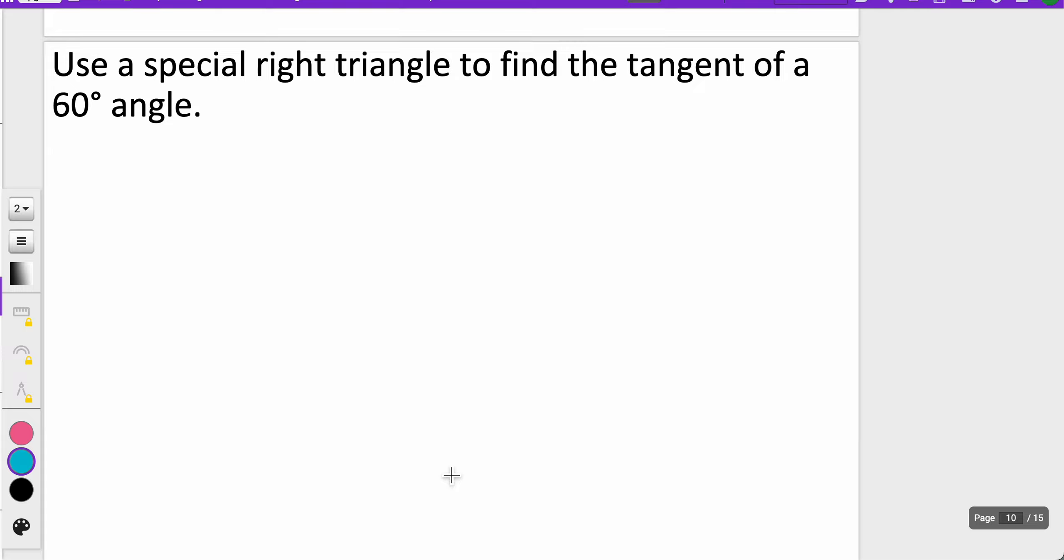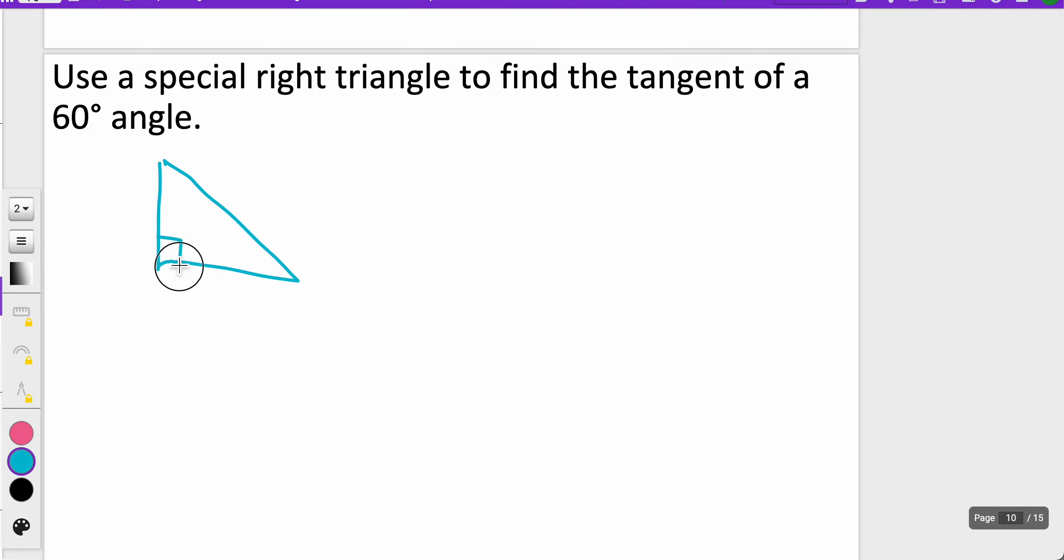Next up, we're going to use a special right triangle to find the tangent of a 60-degree angle. If it's a right triangle, then that means 60 degrees would be one, 30 degrees would be the other. If I want to know the tangent of a 60-degree angle, I also need to remember what is my rule for 30-60-90. For the 30-60-90 theorem, I have my hypotenuse is twice as long as my shorter leg, and my longer leg is my shorter leg times the square root of 3.